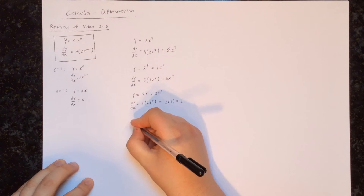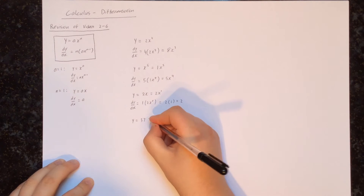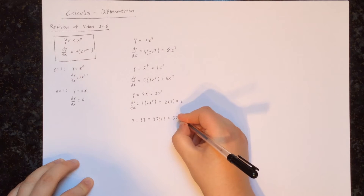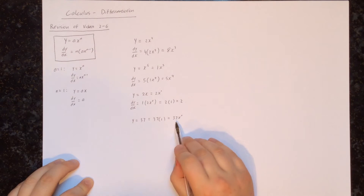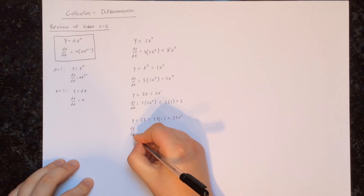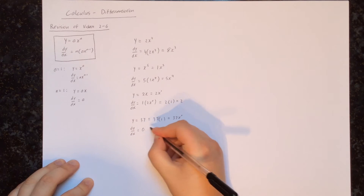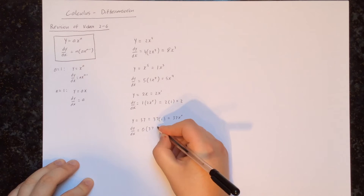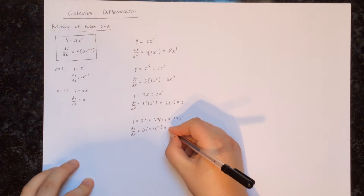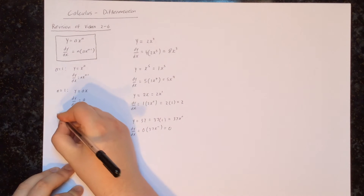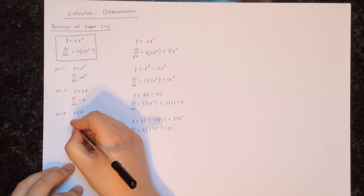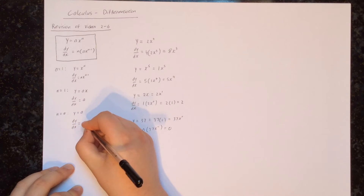Next, let's find the derivative of y equals 37. Well, 37 equals 37 times x to the power of 0. Applying the formula, we multiply by the power which is 0, so our answer will just be 0. In general, if the power of x is equal to 0 — meaning y equals some constant a — the derivative will always be equal to 0.